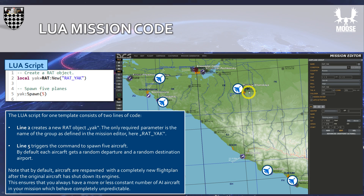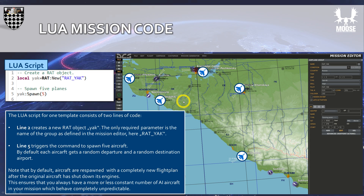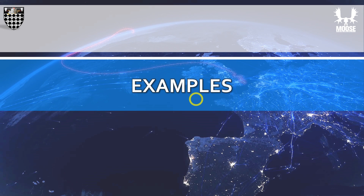They get spawned on random airports and fly to random destinations. When they have reached their destination, they will be despawned and respawned again at another airport. And that's it in its most basic version. In the following episode, I will show you a few simple examples — in particular how to restrict departure and destination airports, but also some other handy options. Thanks for watching, and I'll see you next time.